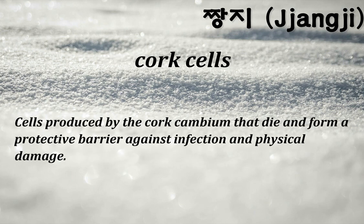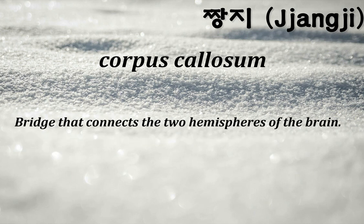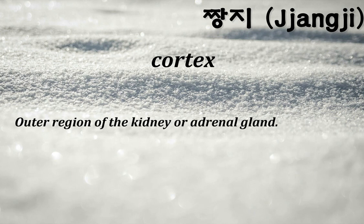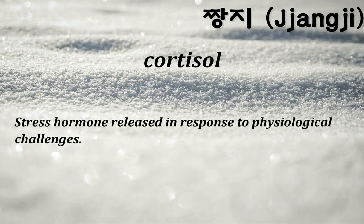Cork cells: cells produced by the cork cambium that die and form a protective barrier against infection and physical damage. Corpus callosum: a bridge that connects the two hemispheres of the brain. Cortex: outer region of the kidney or adrenal gland. Cortisol: a stress hormone released in response to physiological challenges.